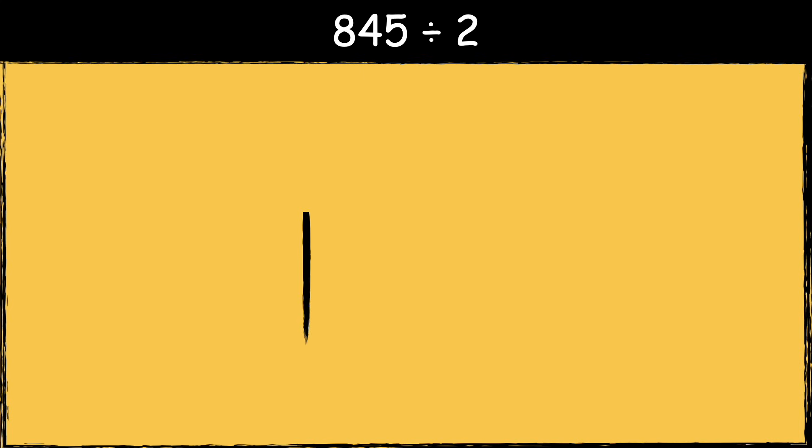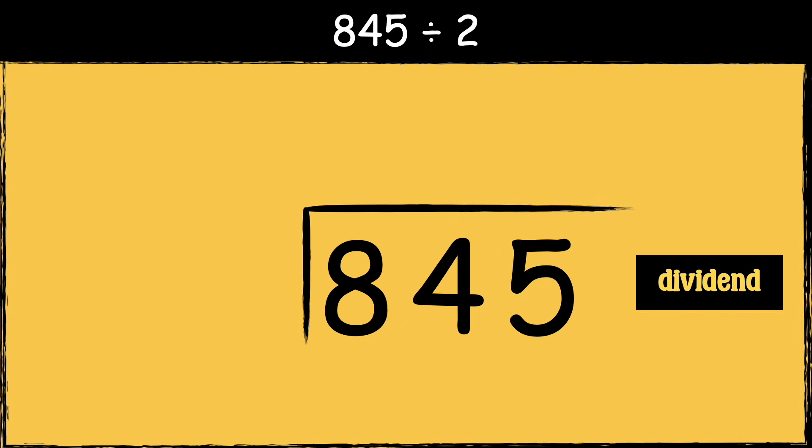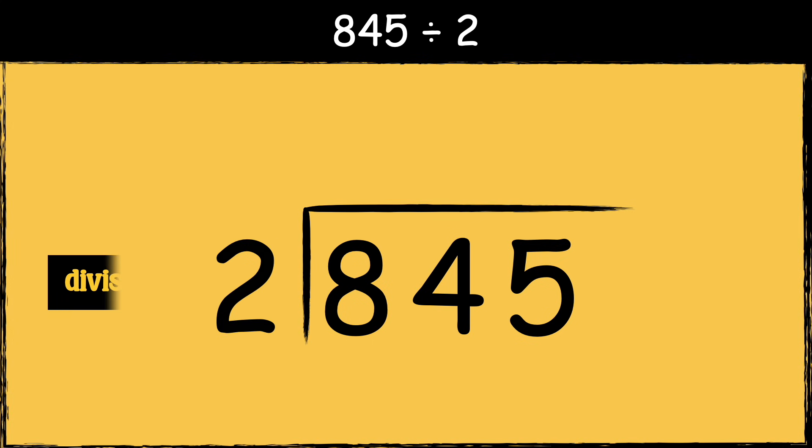Here's the first example: 845 divided by two. First we need to draw the bus stop. We put the number that we're dividing — the dividend — inside the bus stop, and we put the number that we're dividing it by — the divisor — next to the bus stop.